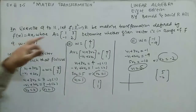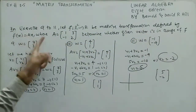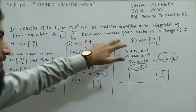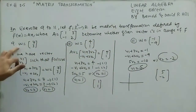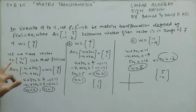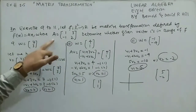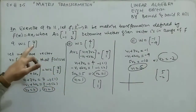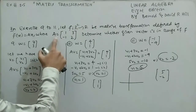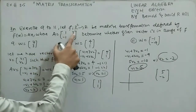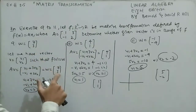Now solving questions 9 to 11. Let a function from R² to R be a matrix transformation defined by f(x) = Ax, where A = [[1,3],[-1,2]]. Determine whether the given vector is in the range of f. For question 9, w = (7,3). Let v = (v1,v2) such that f(v) = w. Then A·v gives v1 + 3v2 and -v1 + 2v2, which should equal (7,3).